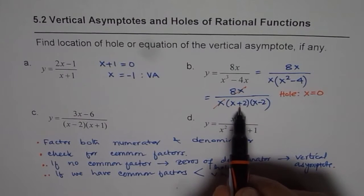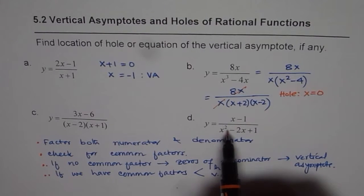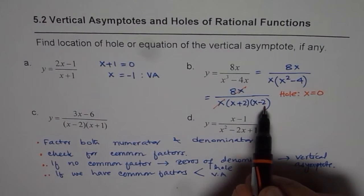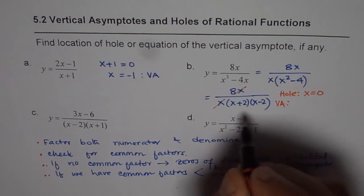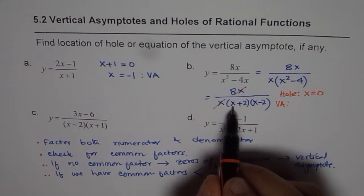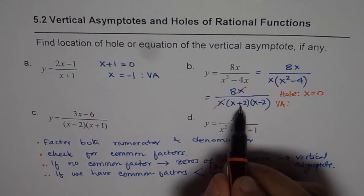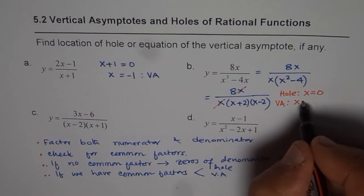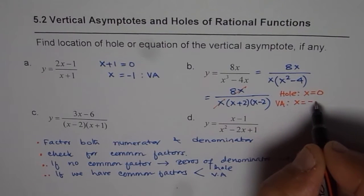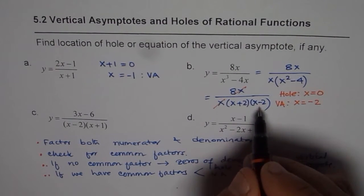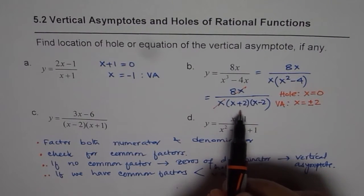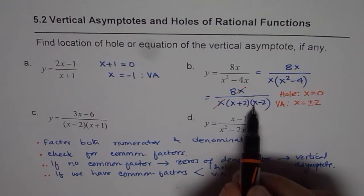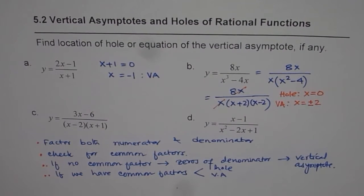However, we still have two remaining factors in the denominator, and both of them will lead to vertical asymptotes. Setting x + 2 = 0 gives x = −2, and setting x − 2 = 0 gives x = +2. So there are two vertical asymptotes at x = ±2.